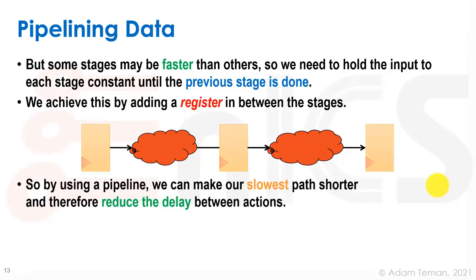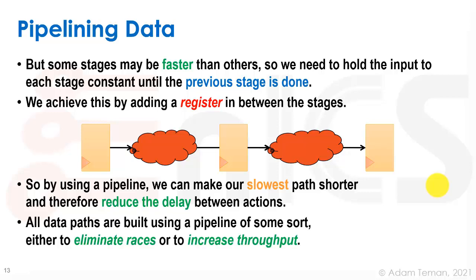So using a pipeline, we can make our slowest path shorter and therefore reduce the delay between actions. All data paths are built using a pipeline of some sort, either to eliminate races or to increase throughput.